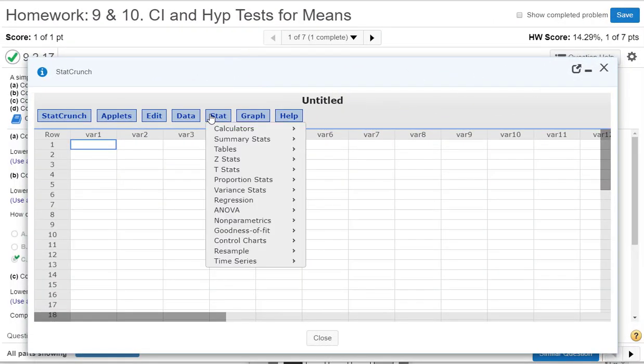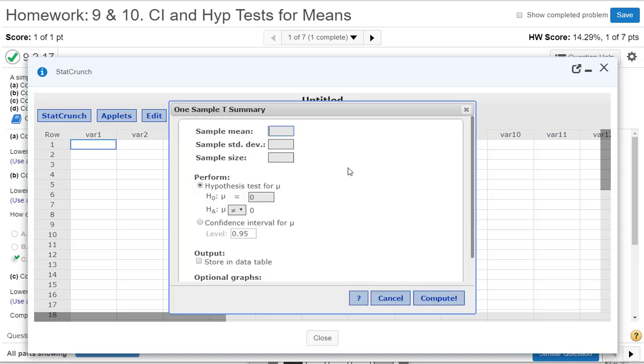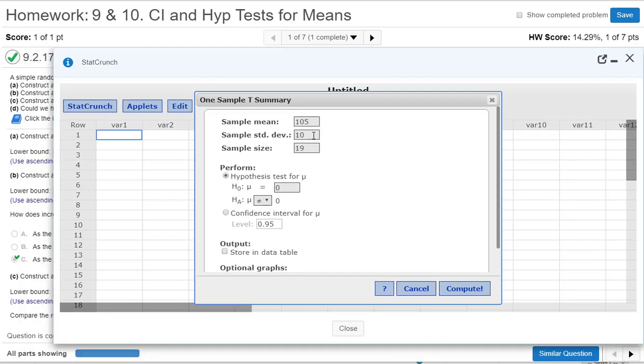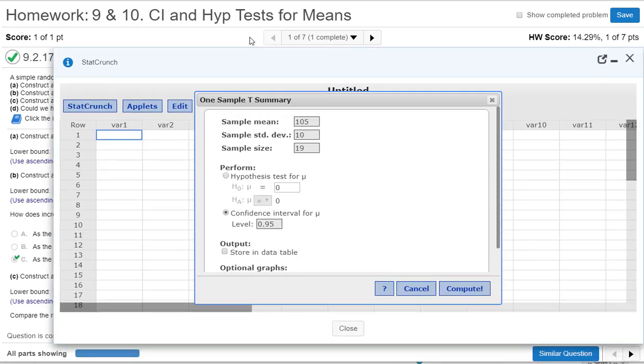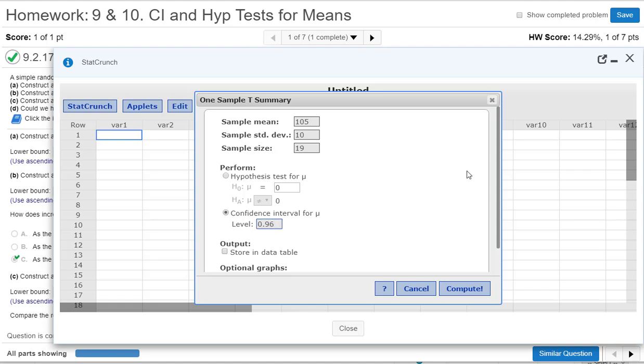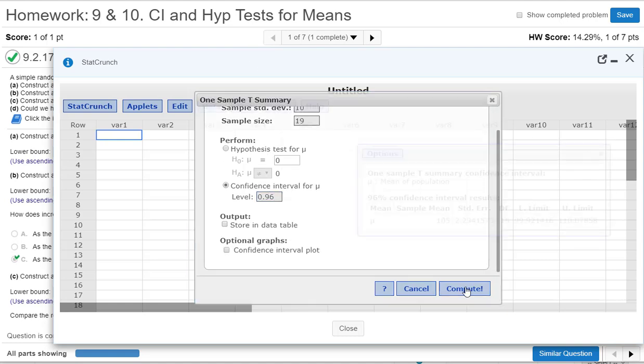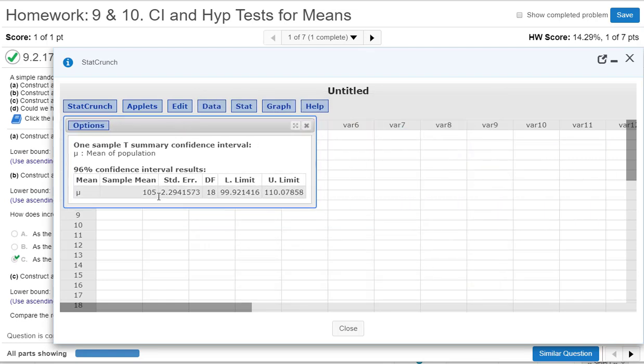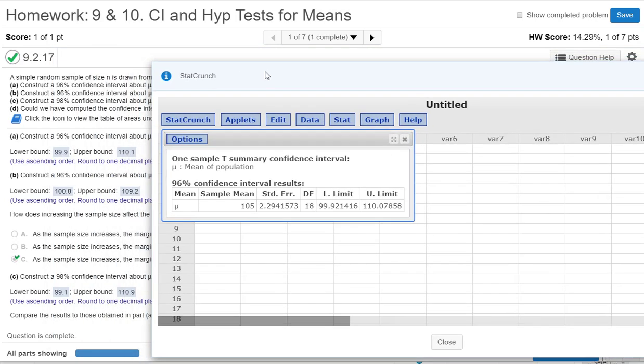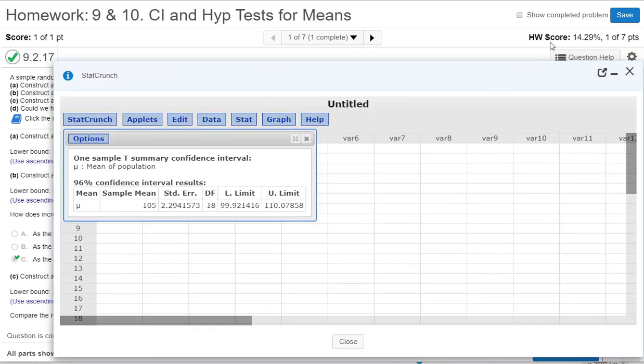And StatCrunch, real quick, we're going to go to stat, t stat, we have one sample, and we just have summary data. And then we just put all this in. So the sample mean, I just put sample mean in, 105, sample standard deviation of 10. We're just going to do this first one, they're all done the same. Sample size is 19, confidence interval, and we are doing a 96% confidence interval. And then press compute. And there we go. Same interval that we obtained when we did this on the calculator. 99.9 and 110.1. Hope that helps. Thank you.